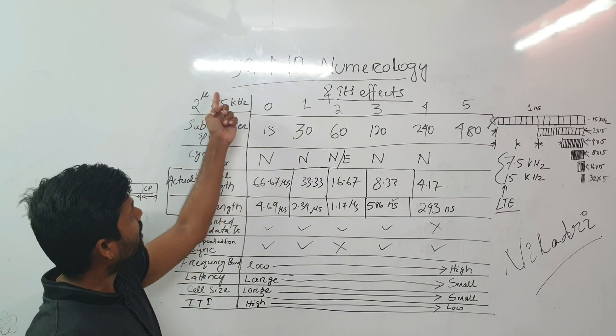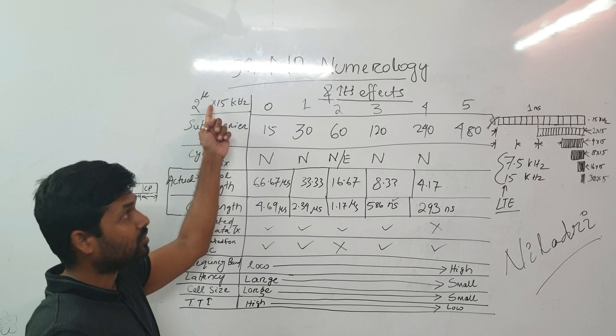Then 2 to the power 1 into 15 would be 30. 2 to the power 1 is 2, 15 into 2 is 30.